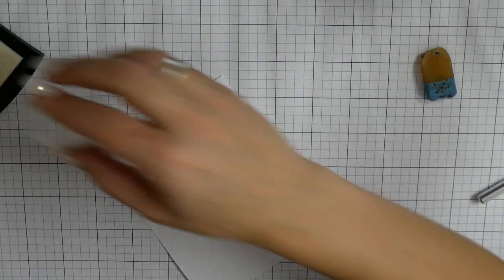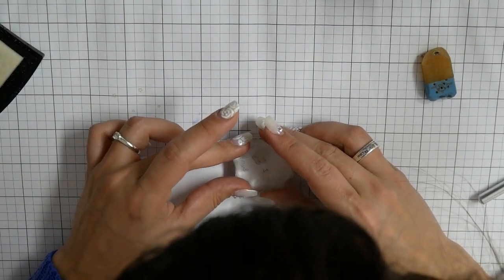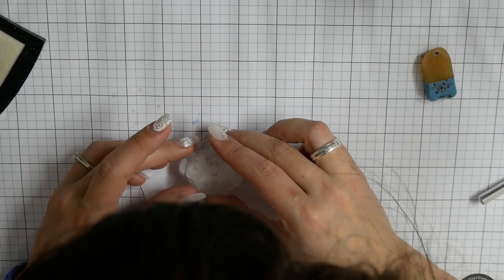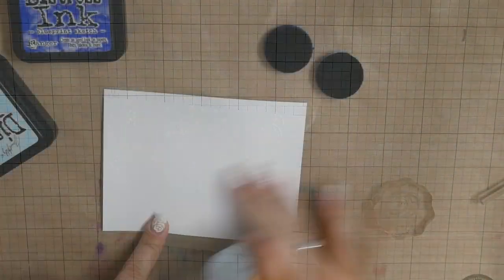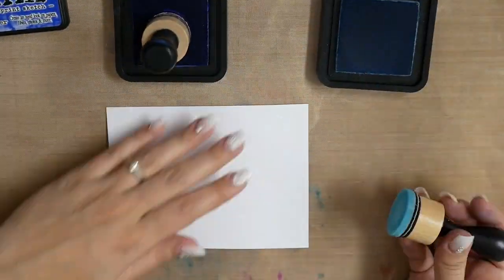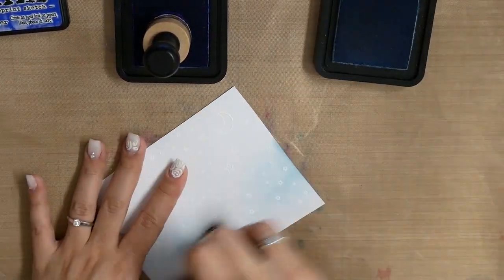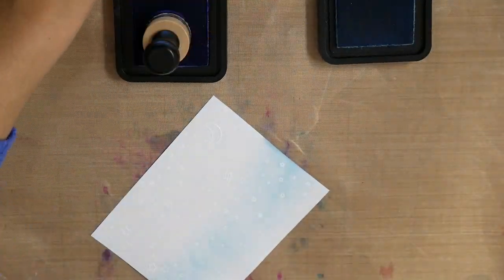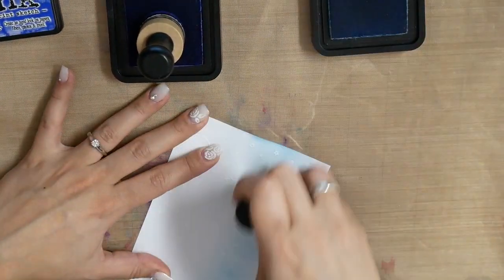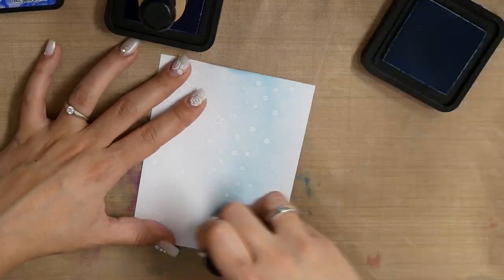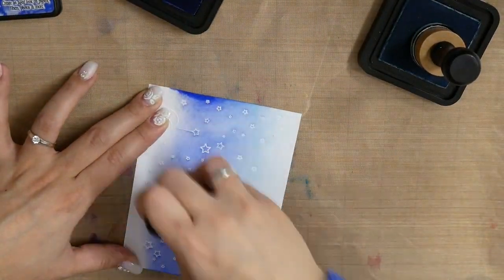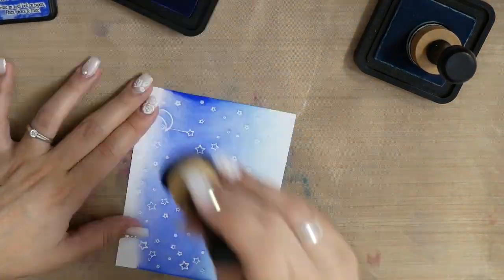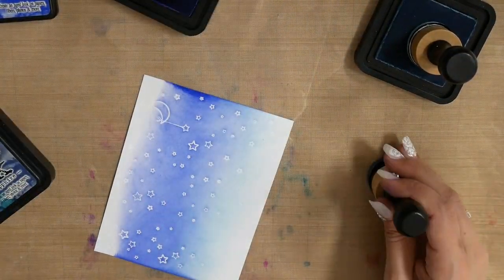You can barely see it, but it is there. This is why you can see my head in the camera because I truly couldn't see it very well. I am using here Tumbled Glass, Blueprint Sketch, and Chipped Sapphire Distress Ink, and I am creating an ink-blended background. Now you can see all my stars that I heat embossed.